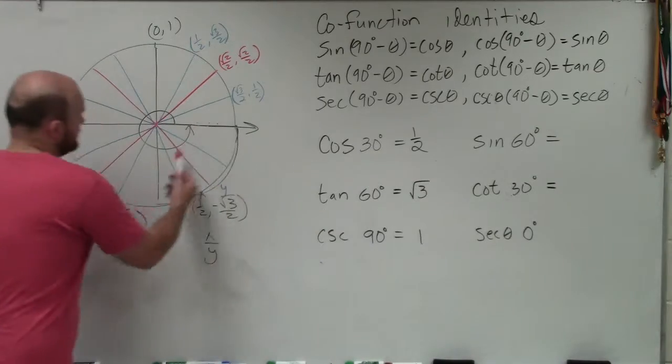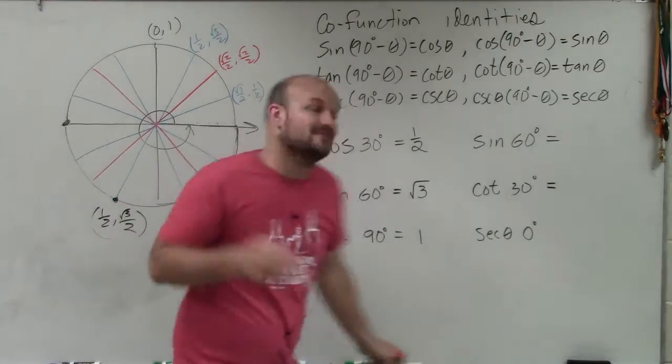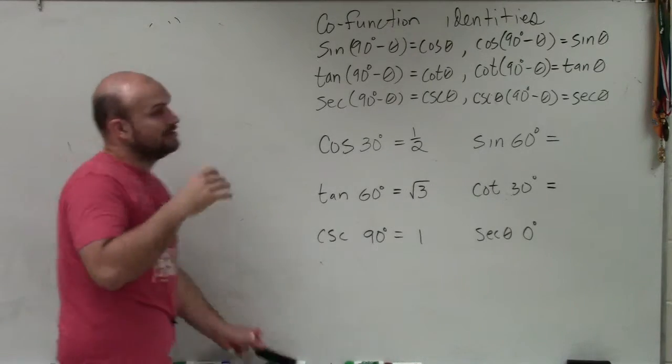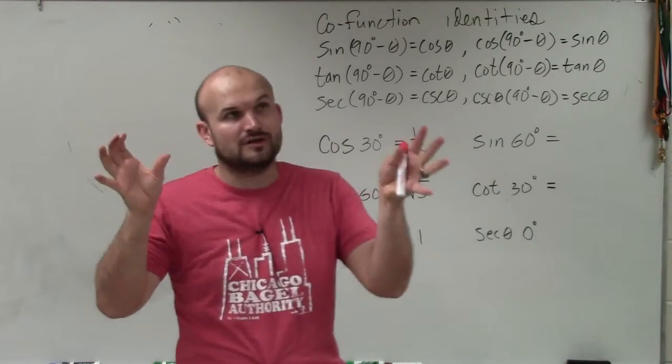Rather than going over to my unit circle, or let's say I don't even have my unit circle - I'm trying to think of this stuff on my own, or it's a test. I notice sine and cosine, those are co-function identities.